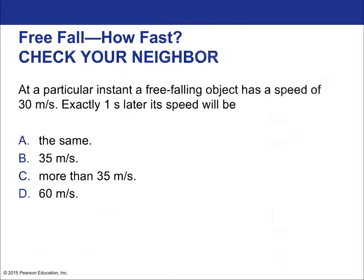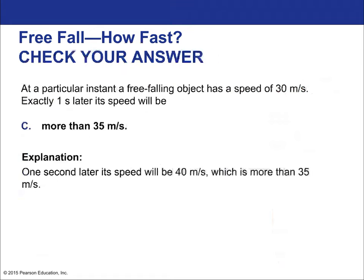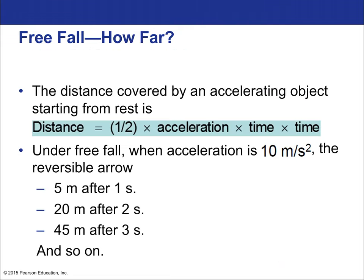Quick check: at a particular instant, a free-falling object has a speed of 30 meters per second. Exactly one second later, its speed will be about 40 meters per second — because using g ≈ 10 m/s², it's exactly 40.